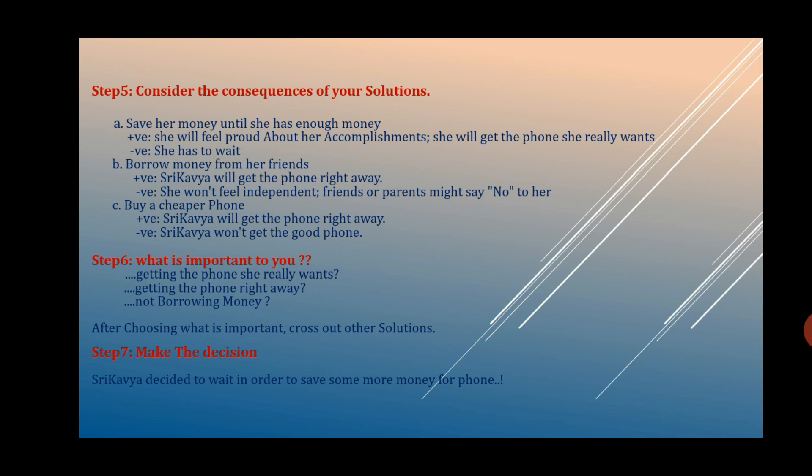Coming to the sixth step: what is important to you? Getting the phone she really wants, getting the phone right away, and not borrowing money. After choosing what is important, cross out the other solutions. Finally, make the decision. Sri Kavya decided to wait in order to save some more money for the phone.